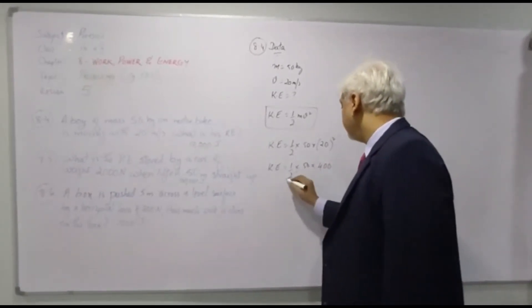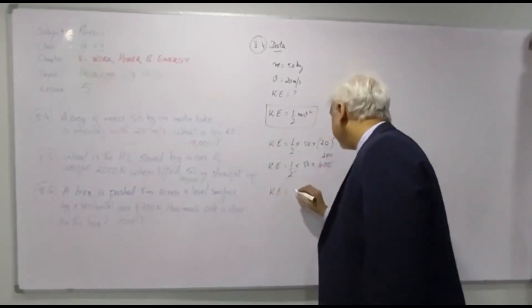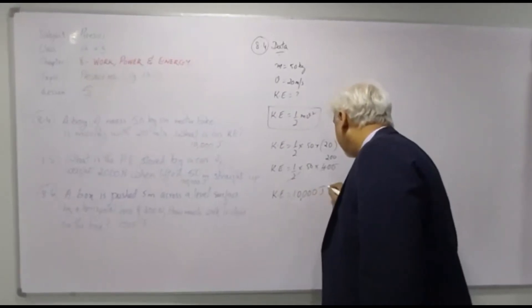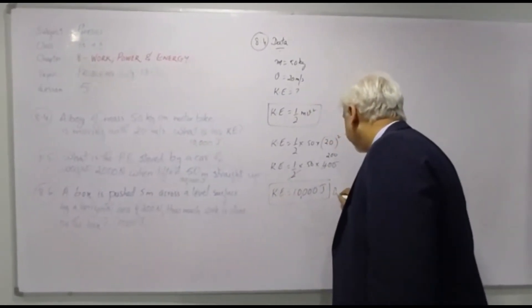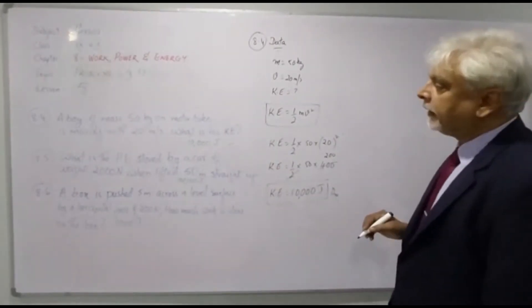So 2 will go to 100, 200 times kinetic energy is equals to 1, 2, 3, 1, 2, 3, so 10,000 joules is the answer. 10,000 joules is the kinetic energy.